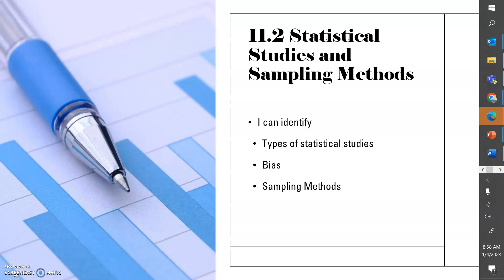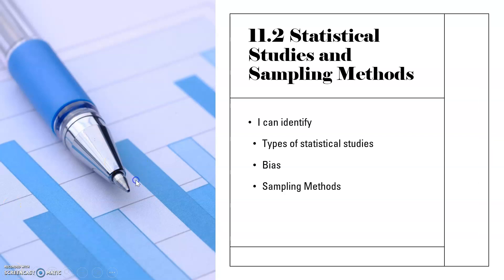The next section is about statistical studies and sampling methods. The goals for today are to be able to identify the different types of statistical studies, how bias can happen and what bias is, and also the types of sampling methods you can use.